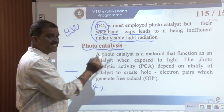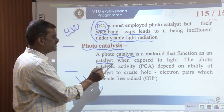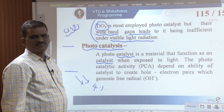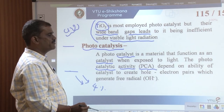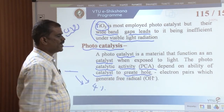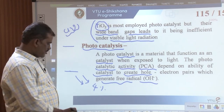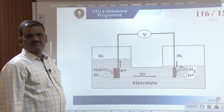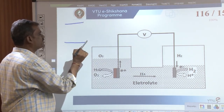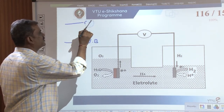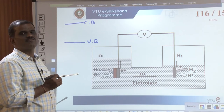What is photocatalysis? A photocatalyst is a material that functions as a catalyst when exposed to light. Its photocatalytic activity depends on its ability to create electron-hole pairs which generate free radicals. The key requirement is that the difference between the valence band and the conduction band of the photocatalyst should be the same as, or nearly equal to, the reduction potential of water.